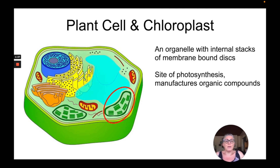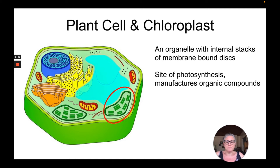So here we have the chloroplast. It is an organelle that has internal stacks of membrane-bound discs, and you can see there it looks like a stack of pancakes. That's how we typically identify the chloroplast. It has these discs that look like a stack of pancakes, and each disc is bound with its own membrane. All of those discs have their own membrane.